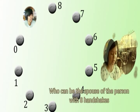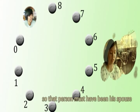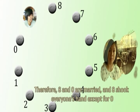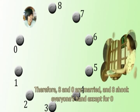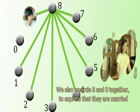Who can be the spouse of the person with eight handshakes? We know that he or she did not shake the hand of only one other person, so that person must have been his spouse. On the other hand, eight certainly did not shake the hand of the person with no handshake. Therefore, eight and zero are married, and eight shook everyone's hand except for zero. We represent this by joining his vertex to all vertices other than zero.